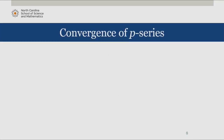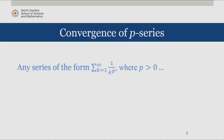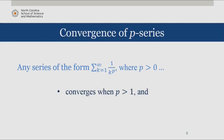So in summary, for any series of the form from k equals 1 to infinity of 1 over k to the p, where p is greater than 0, the series converges when p is greater than 1, and diverges when p is between 0 and 1.